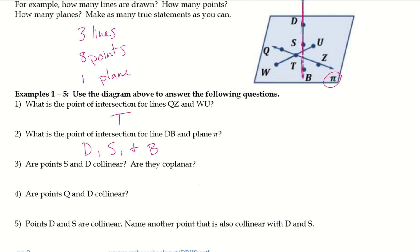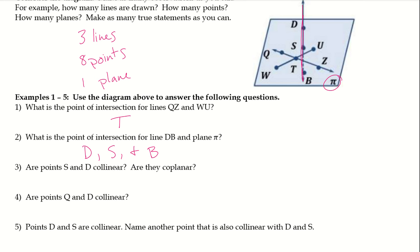Are the points S and D collinear? Are they coplanar? S and D — they are definitely collinear, yes, and they lie on the same plane as well. Are Q and D collinear? Here's Q and here's D. Remember, if we only have two points, we can always draw some sort of line through them, so yes, they are collinear.